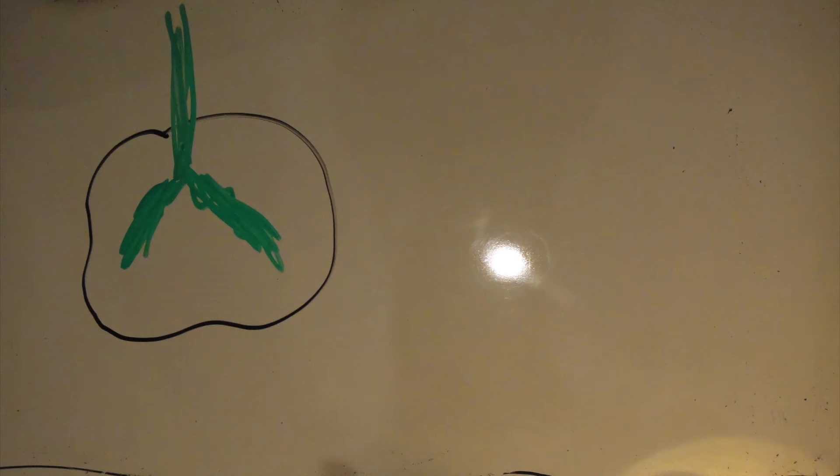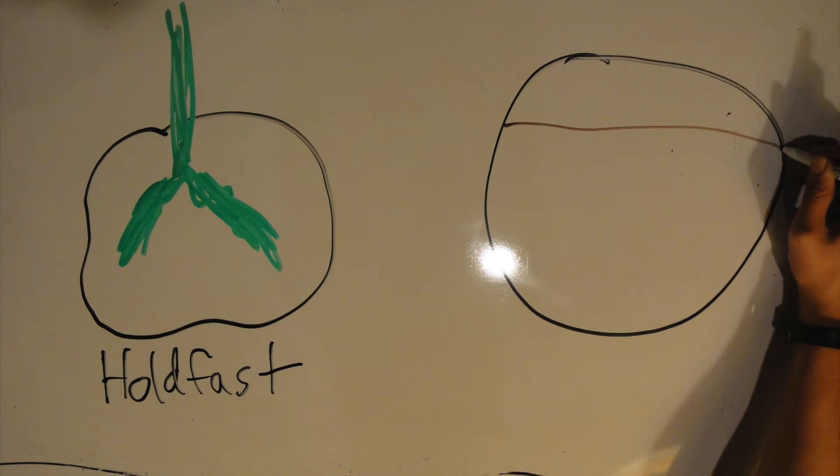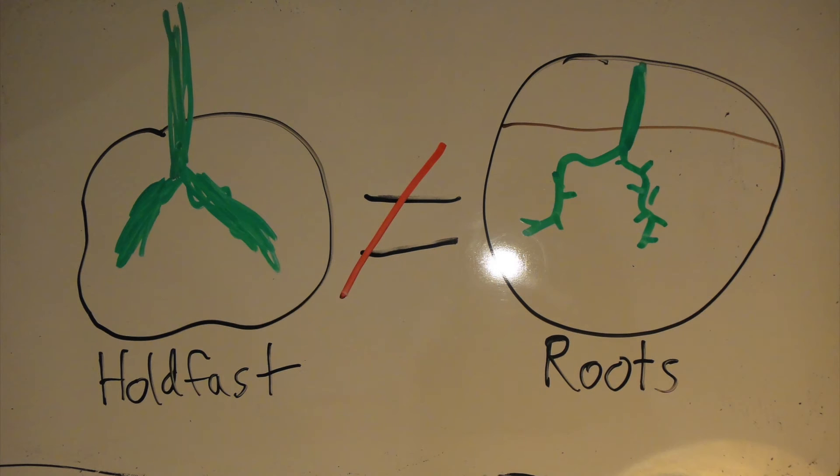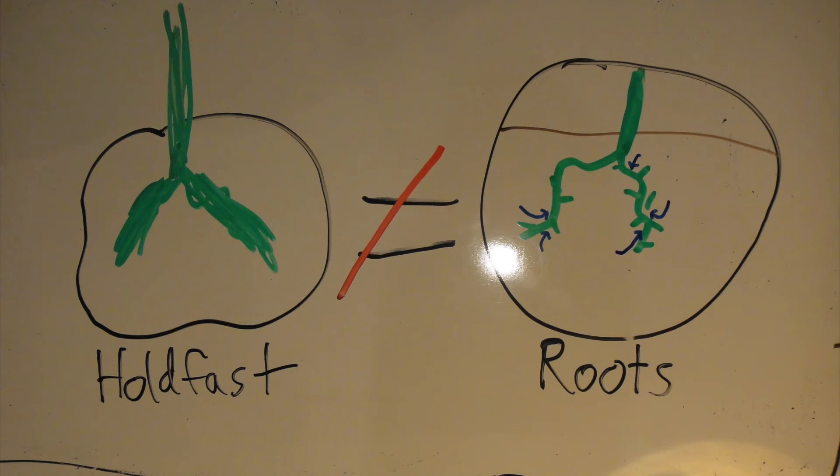Lastly, there is the holdfast, the part that anchors the kelp to the ground. So it's kind of like the roots of a plant, except it's not. Kelp can only use the holdfast for anchoring, while the plant uses its roots to also take in nutrients from the soil.